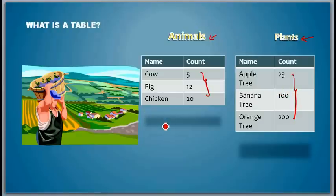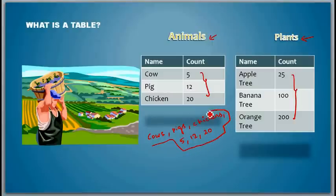So if you look at the format, this is the default human tendency to list things. Imagine if someone lists it as like, I have some cows, I have some pigs, I have some chickens, and the number of cows I have is 5, the number of pigs I have is 12, the number of chickens I have is 20. If someone writes like this, it would be difficult for us to understand this format.